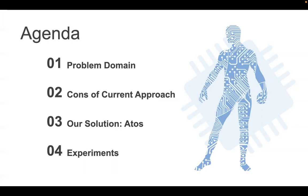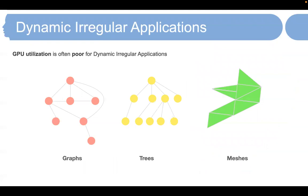Firstly, let's look at our problem domain. Dynamic irregular computations usually work on unstructured data structures, such as graphs, trees, and meshes. The computations on those data structures often evolve. Iterative computing, traversing, are often dynamic and irregular. Therefore, the GPU utilization is often poor for dynamic irregular applications.